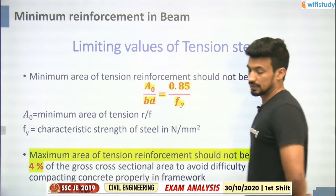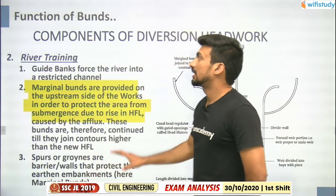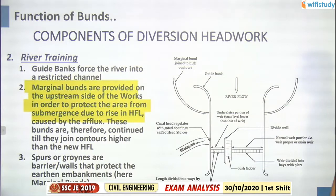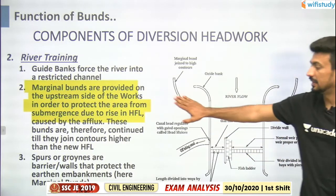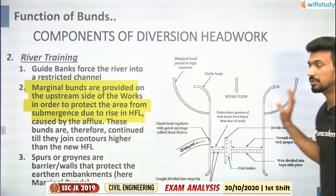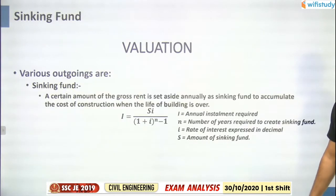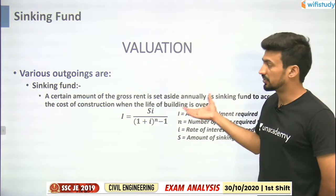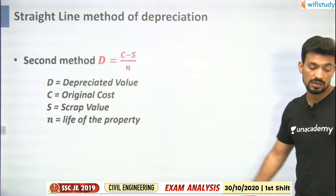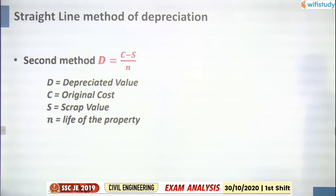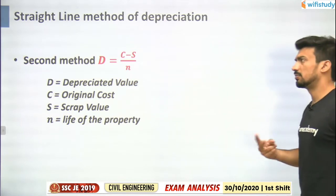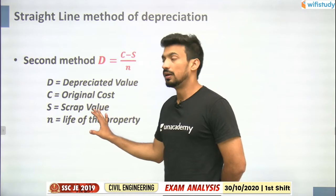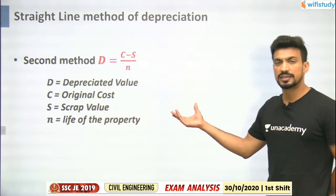The same 4% limit applies for slabs. Function of bunds was asked in river training - marginal bunds protect surrounding areas from submergence. Sinking fund questions appeared in yesterday's shift and today's shift. Straight line depreciation method appeared in the last two consecutive shifts - a simple numerical was asked.